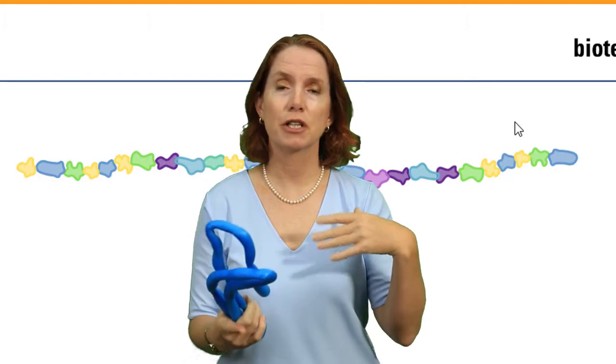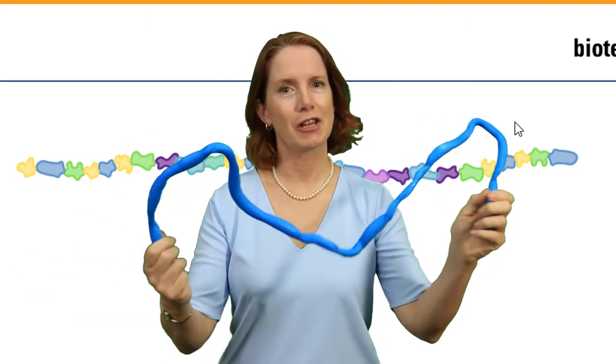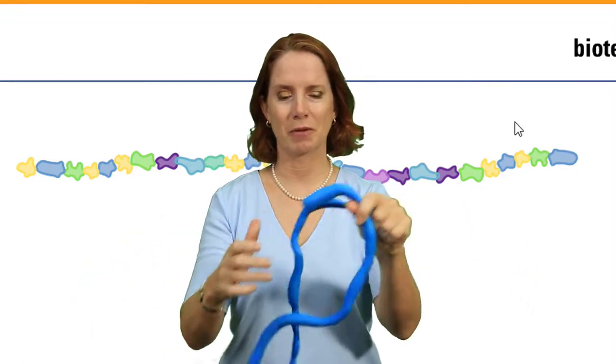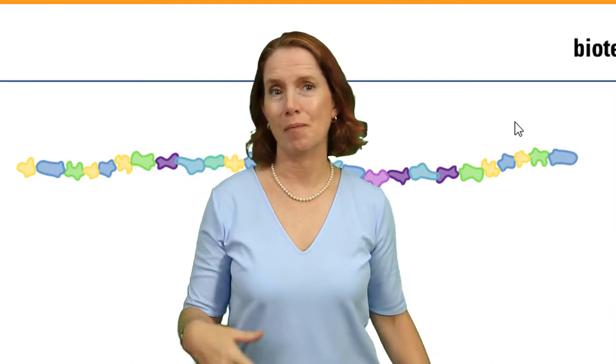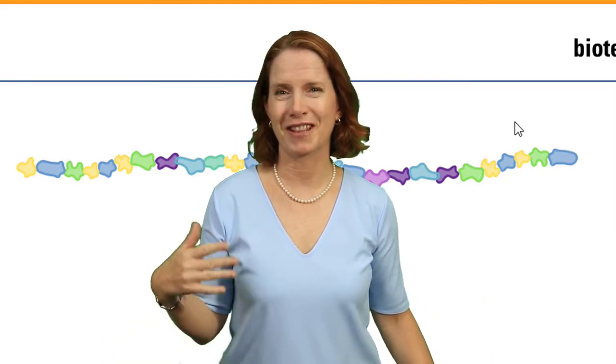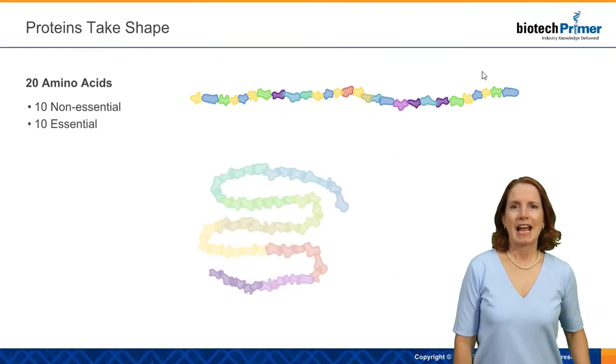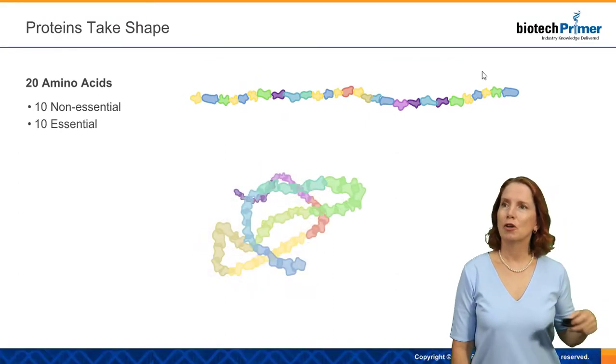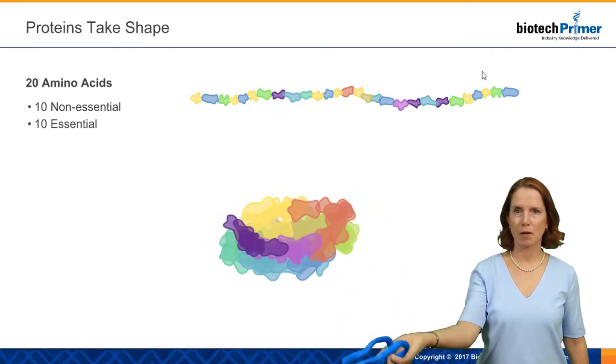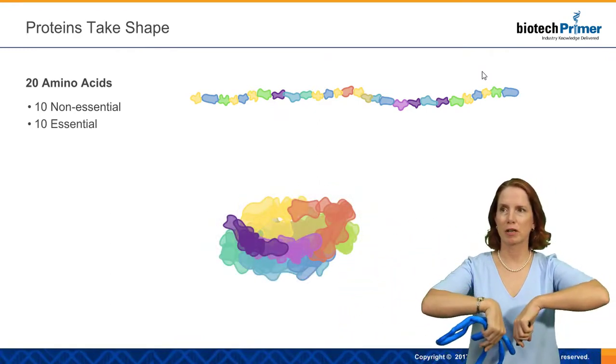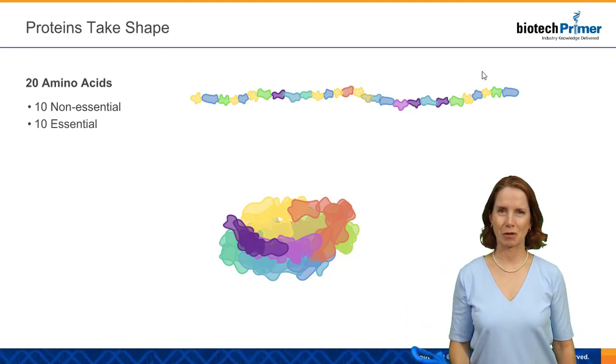And so the protein structure is determined by amino acid sequence and those amino acids interacting with each other up and down the length of a long amino acid chain. It might be hundreds or even thousands of amino acids long. And so the shape, the ultimate shape of the protein as that amino acid chain folds up to give us our complex three-dimensional structure, the ultimate shape is what determines the function of that protein.